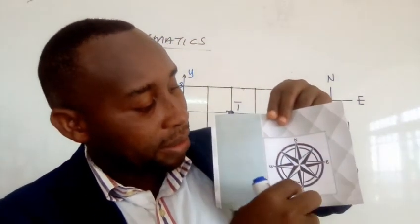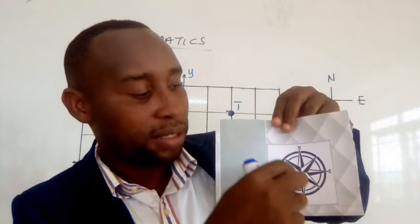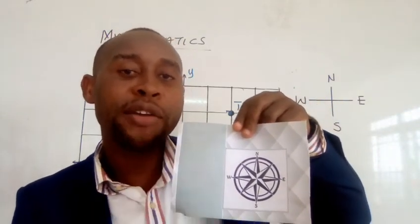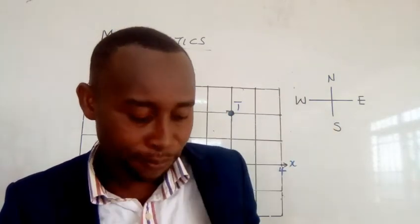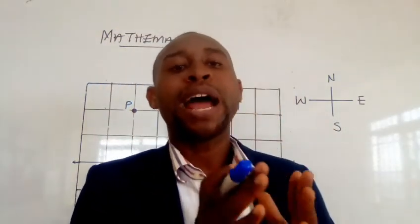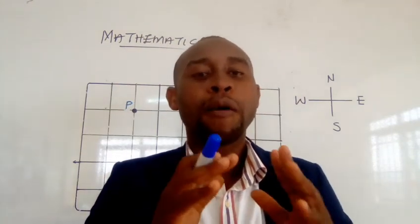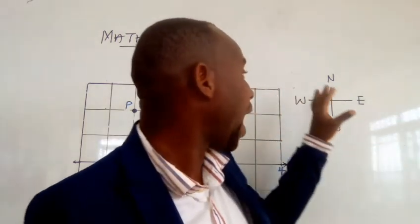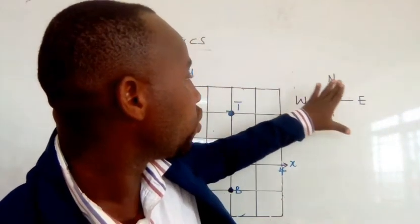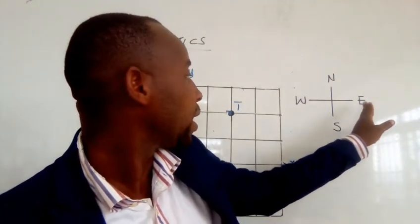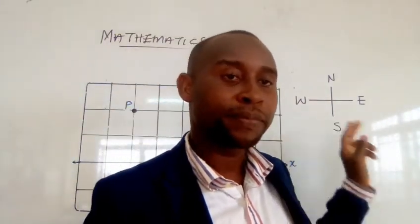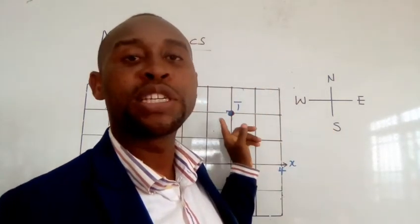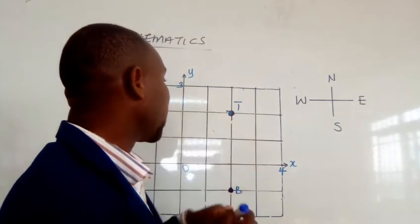The compass shows four main directions: North, South, East, and West. These four main directions are what we call the cardinal points. We are going to use these cardinal points to describe the position of objects: object C, object P, object A, and object B.